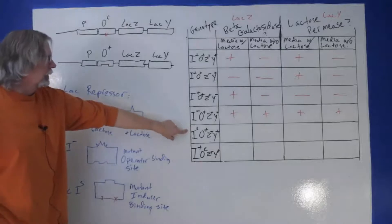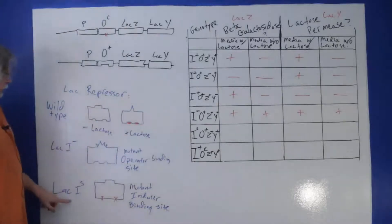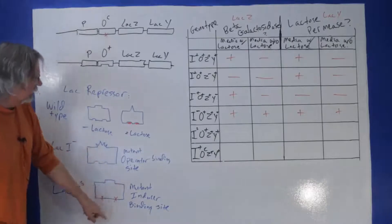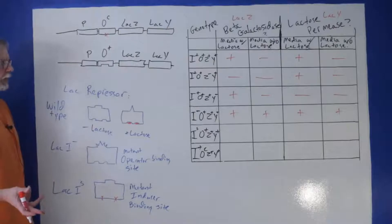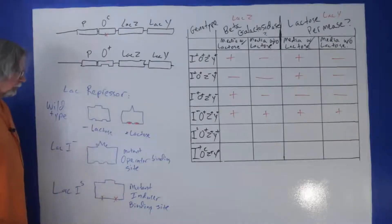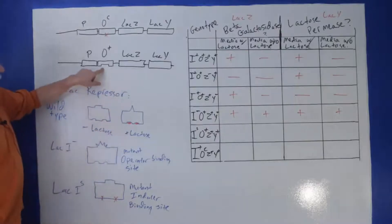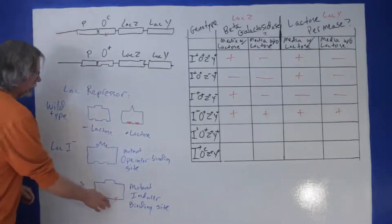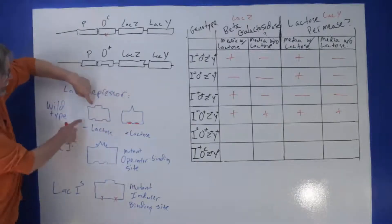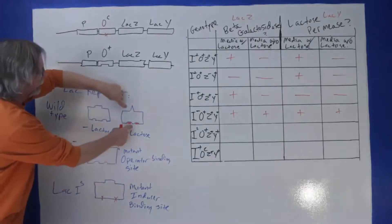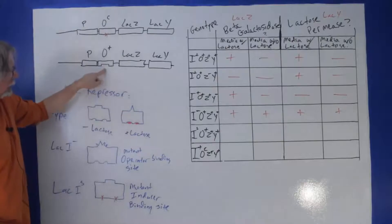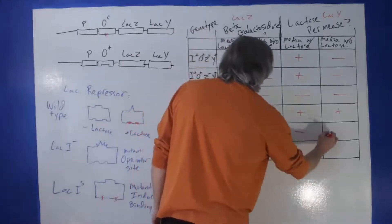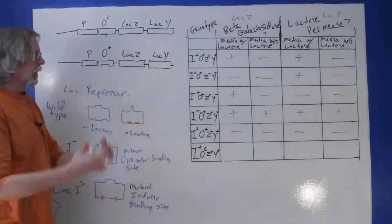The super repressor allele has a mutation not in the operator-binding site, but in the inducer-binding site. So when lactose is present, it can't bind the repressor and can't pull it off. The super repressor is always bound to the operator — in the presence or absence of lactose. Unlike wild-type, where lactose binds and changes the repressor's shape, the super repressor never changes shape. So the operon is always shut off.